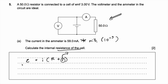Using this, I can solve for the internal resistance, which is small r. The EMF is 3 volts, and the current is 59 × 10⁻³ amperes — I need to convert milliamperes to amperes. This equals the resistance of the resistor, which is 50 ohms, plus the internal resistance r that I want to solve for.